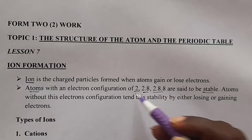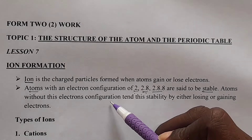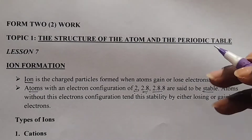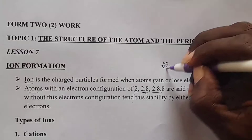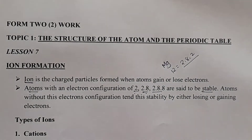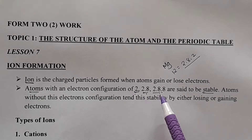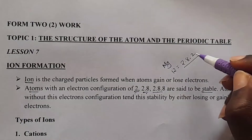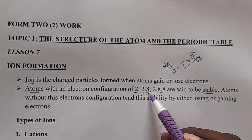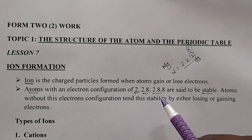So the stable electron configurations are 2,8 or 2,8,8. Therefore, atoms without this electron configuration attain this stability by either losing or gaining electrons. For example, magnesium is number 12 in the periodic table, so its electron configuration is 2,8,2. This is not stable. For magnesium to form an ion, it has to lose 2 electrons to get 2,8, which is a stable electron configuration, or gain 6 electrons to get 2,8,8, which is also stable.